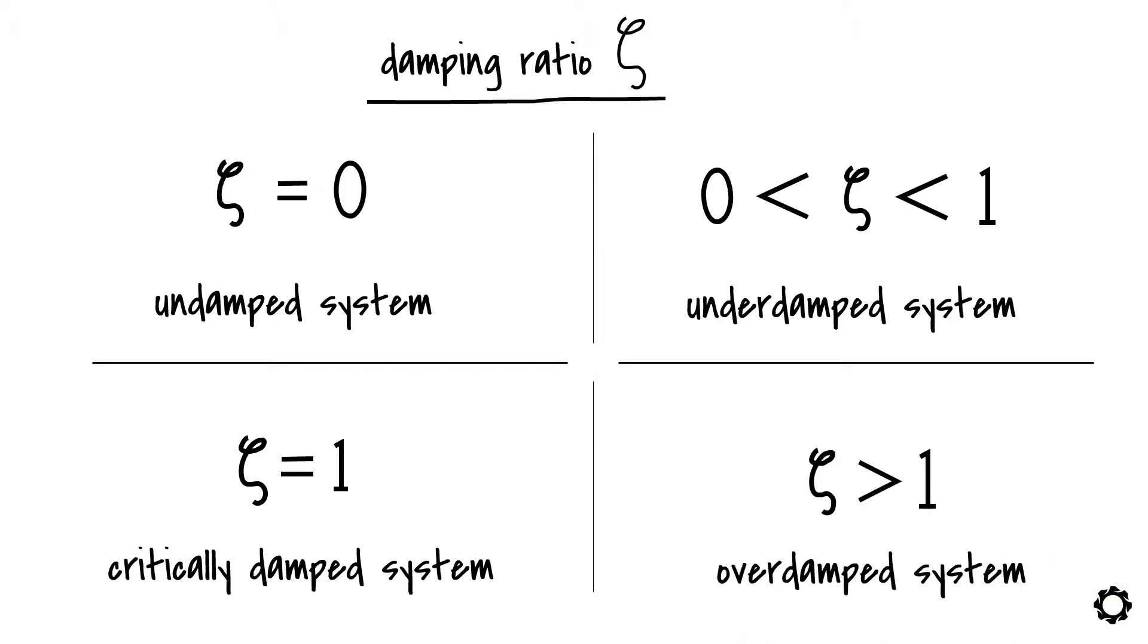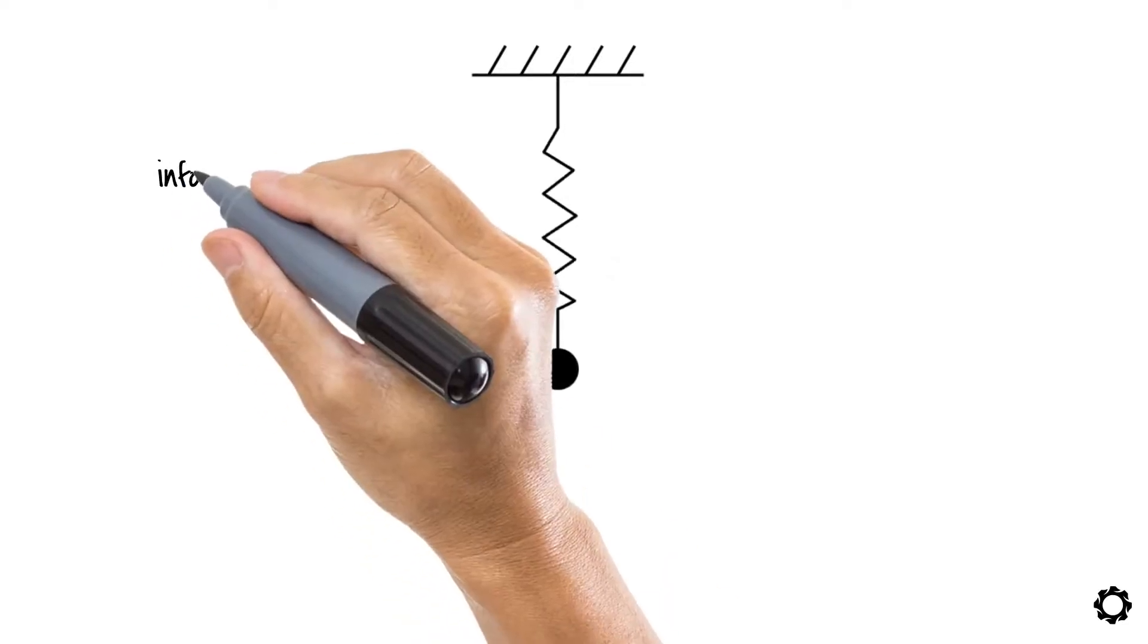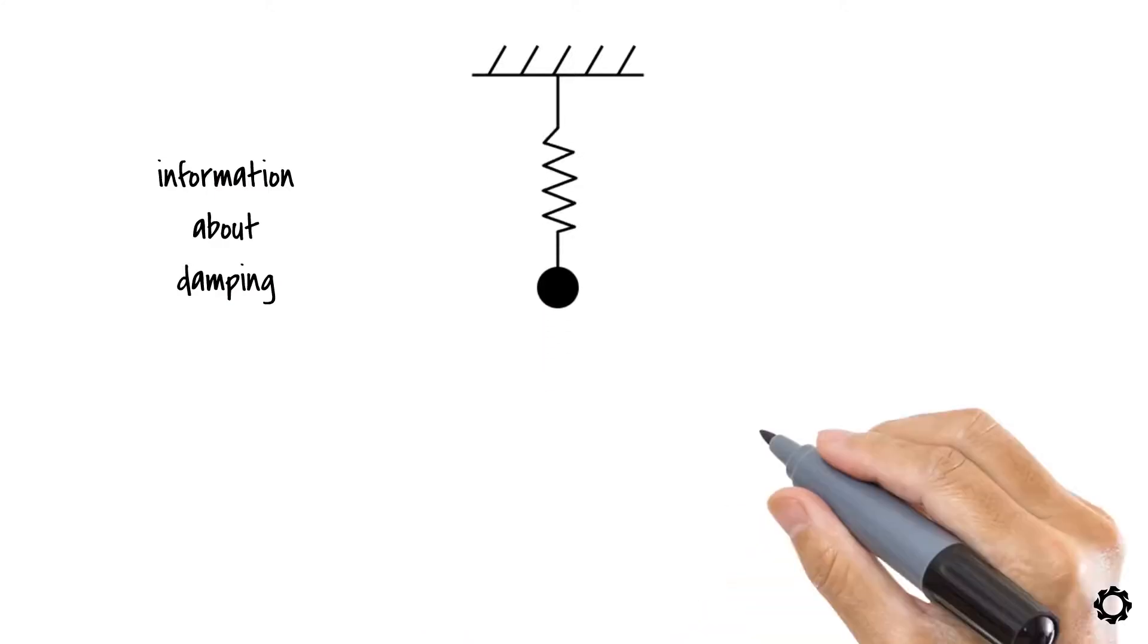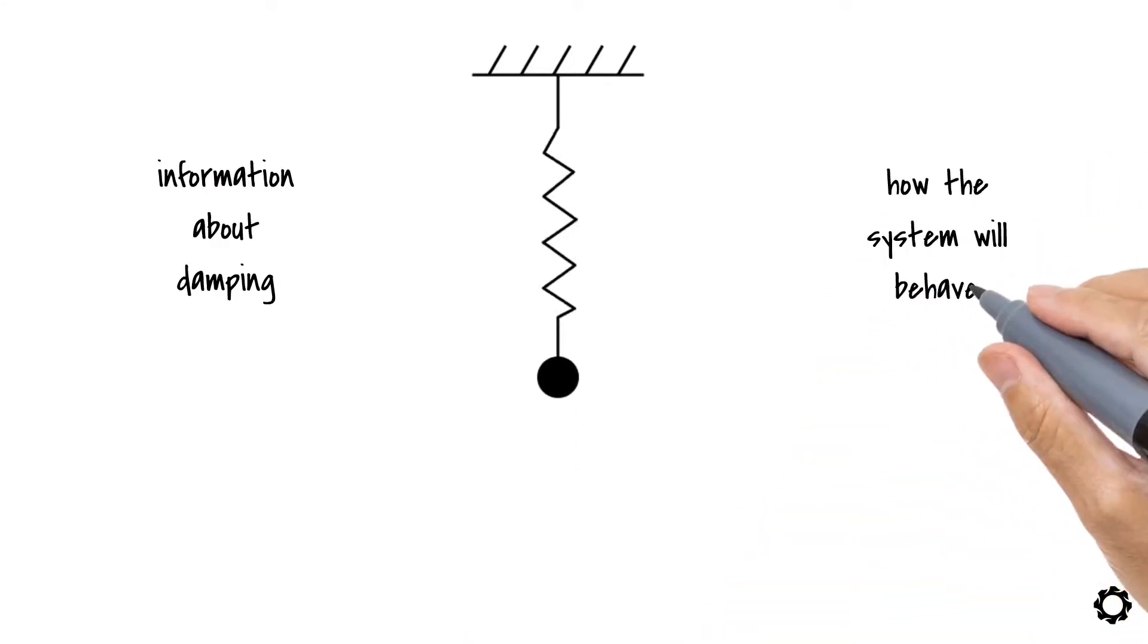Now why is it important to know what type of system we have? Let me show you. Let's take our favorite system, the mass spring system. If we extend the mass and then release it, having information about the damping of the system will allow us to predict how the system will behave. Remember, no other external forces are acting, except for the gravity.